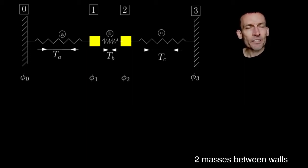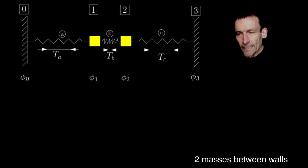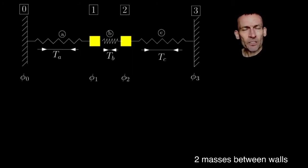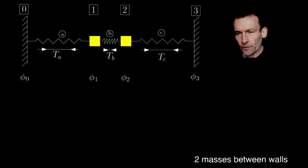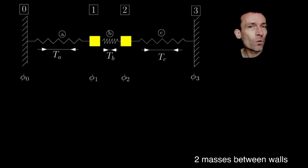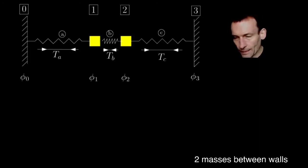Let's get straight on with this. I think the best way to illustrate this is to just do some examples. Here's an example: I've drawn two masses on springs between two walls, and I'm going to assume the walls are fixed. I'm going to model it as four nodes with three edges, so there'll be nodes 0, 1, 2, 3. I've started with 0 as the labeling because I'm eventually going to focus only on the two masses — the yellow masses — and I want to call those 1 and 2. So I've called the wall node 0 in this case.